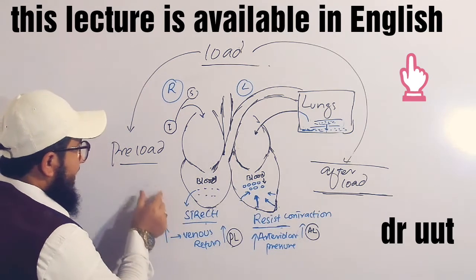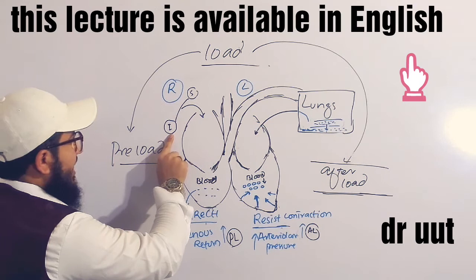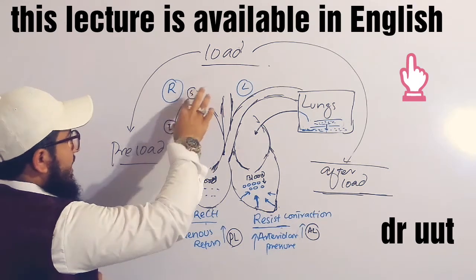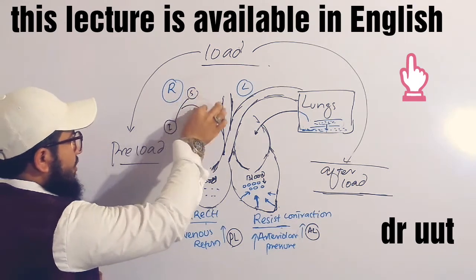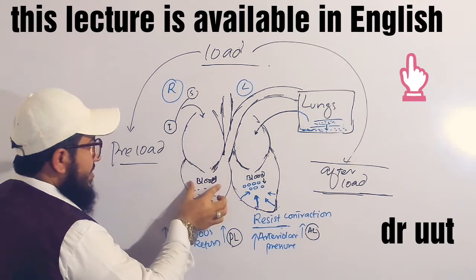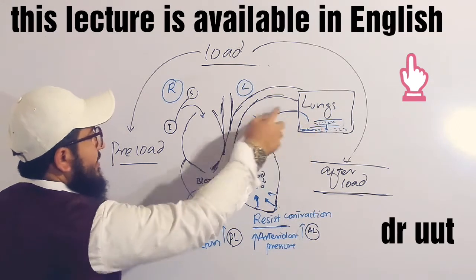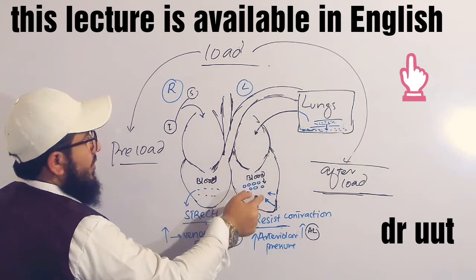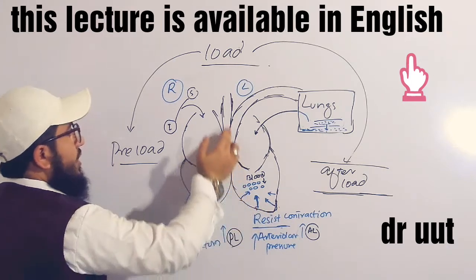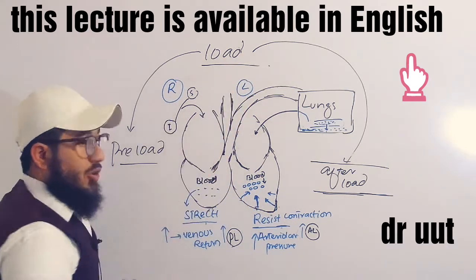Blood coming from the inferior vena cava and superior vena cava is poured into the right atrium, into the right ventricle, then the lungs, then the left atrium, then the left ventricle, and then the whole body by means of the systemic artery.